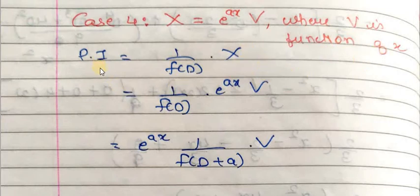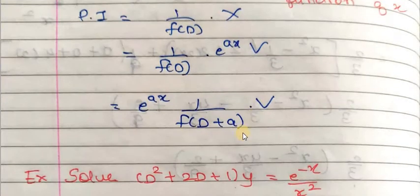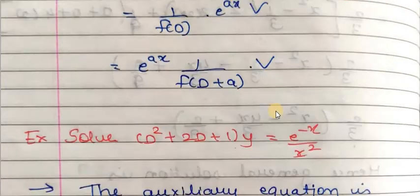To find PI in this case, the formula is one over f(D) applied to x. Since x is e raised to ax into v, we have to replace D by D plus a, so it becomes one over f(D+a). Then we write e raised to ax before this operator, giving e raised to ax into one over f(D+a) into v. Then we apply the operator one over f(D+a) on v, as discussed in Cases 2 and 3.